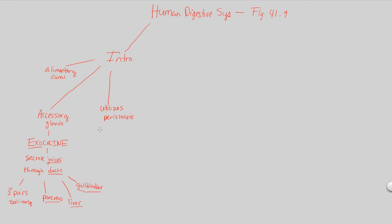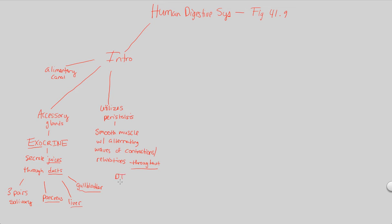Peristalsis is a term we've mentioned before, but in the context of human digestion, what we need to understand is the following: this is when we utilize smooth muscle. Smooth muscle is involuntary, and that smooth muscle will have alternating waves of contractions and relaxations — a contraction followed by a relaxation, contraction, relaxation — all not controlled by you, all involuntarily controlled by smooth muscle. This is seen all throughout the digestive tract.